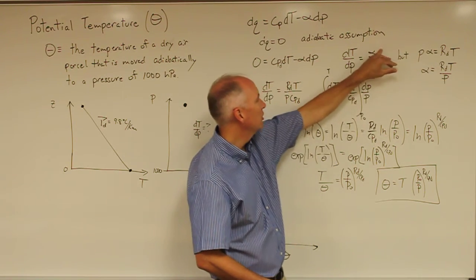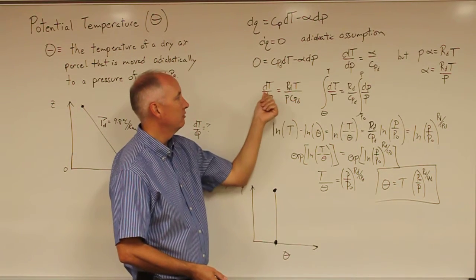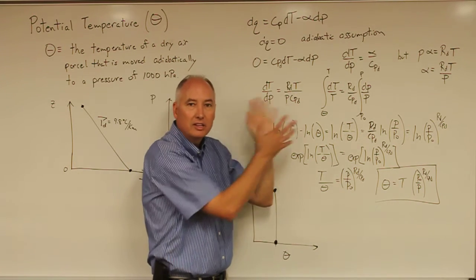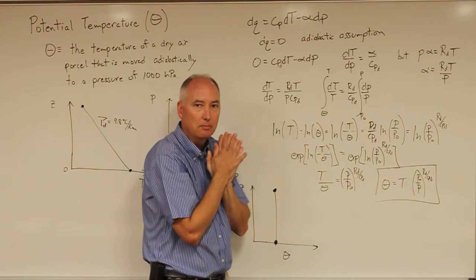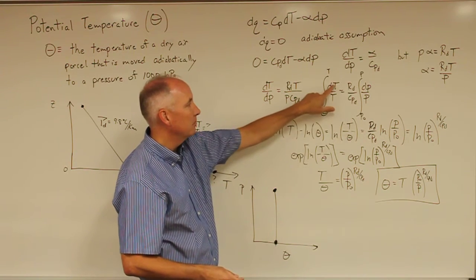We'll make that substitution into that equation. And then we have DT on this side, T on that side, DP on this side, P on that side. We need to algebraically manipulate this equation to get the correct terms on either side.